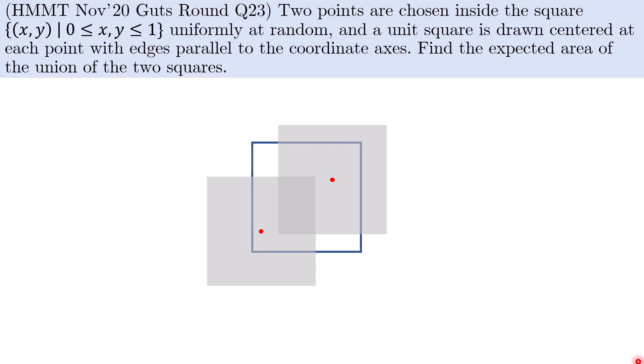Let us first ask ourselves: what is the set of points which have a chance of being covered by at least one of the two squares? This is given by the dotted square as shown here.